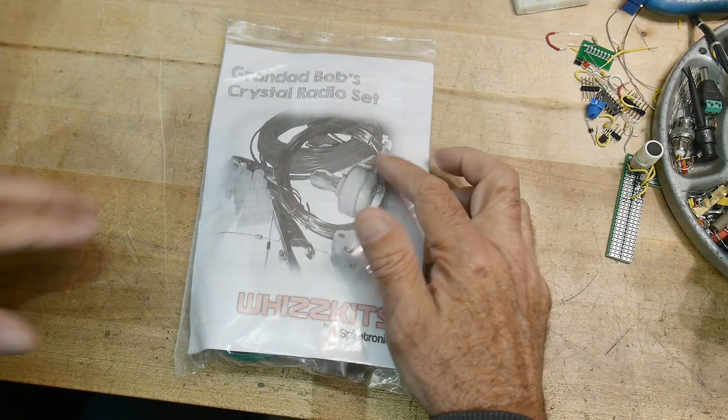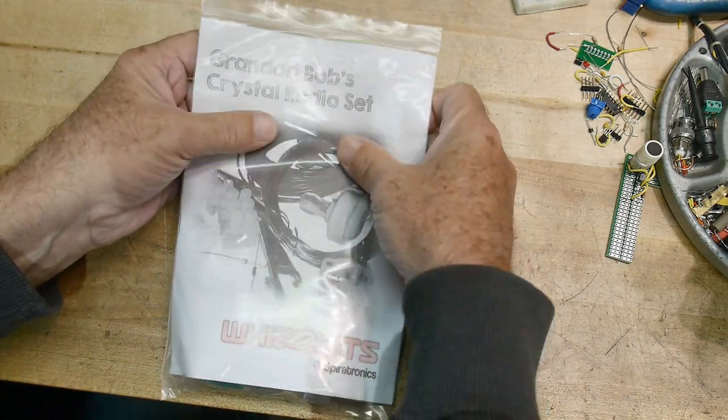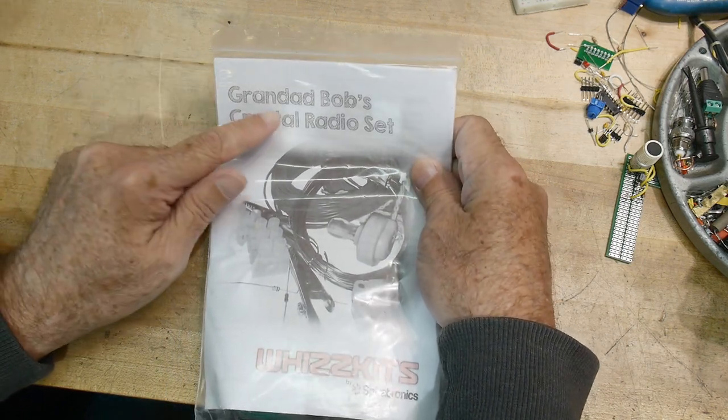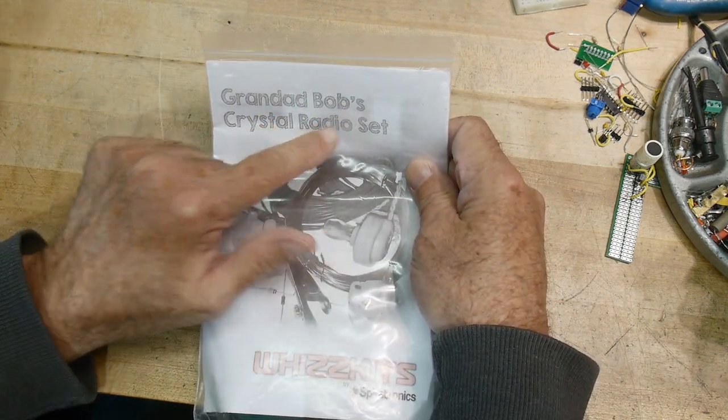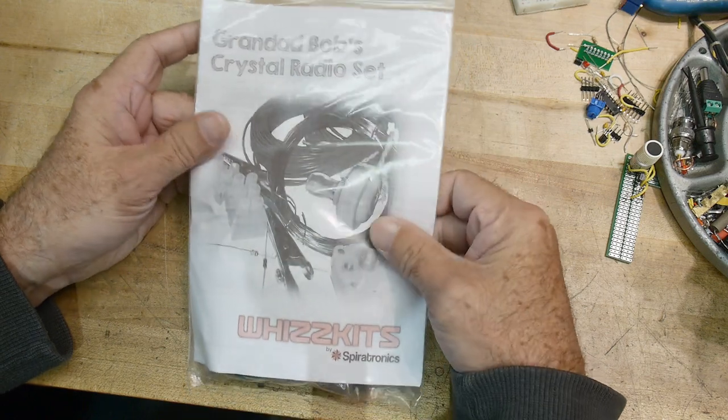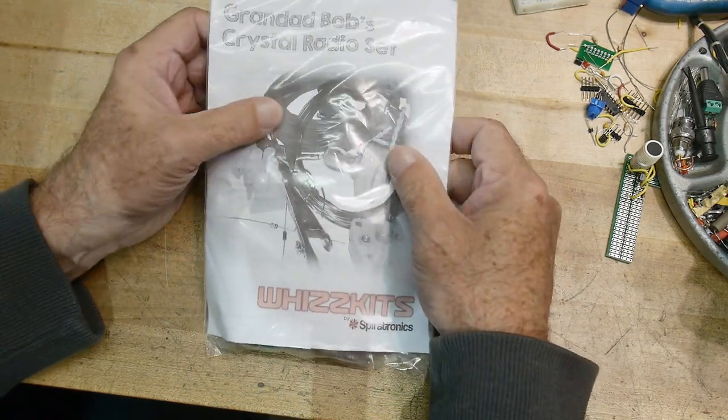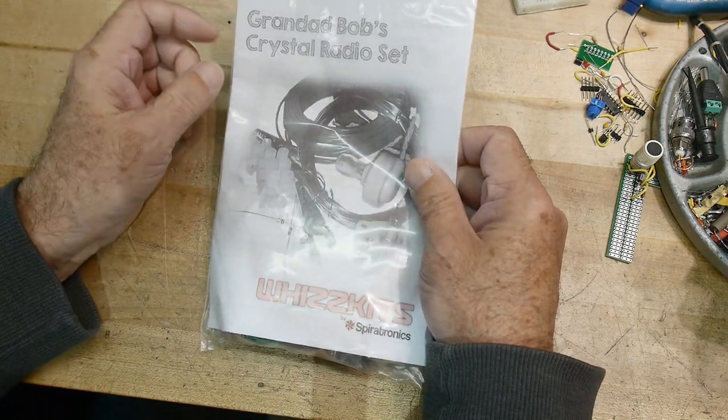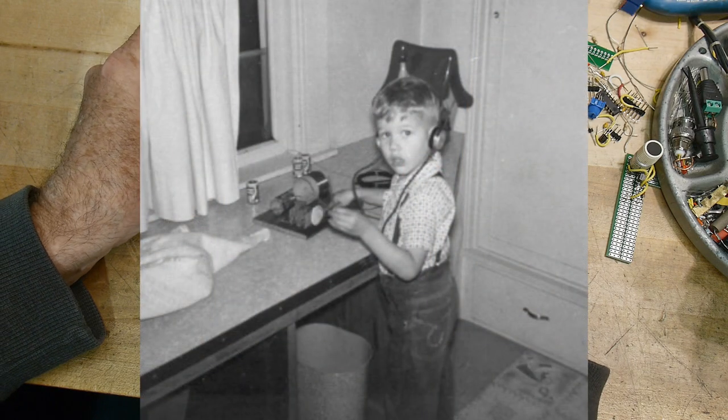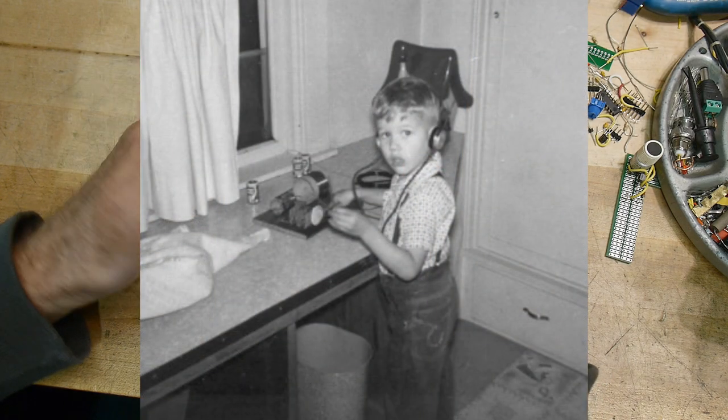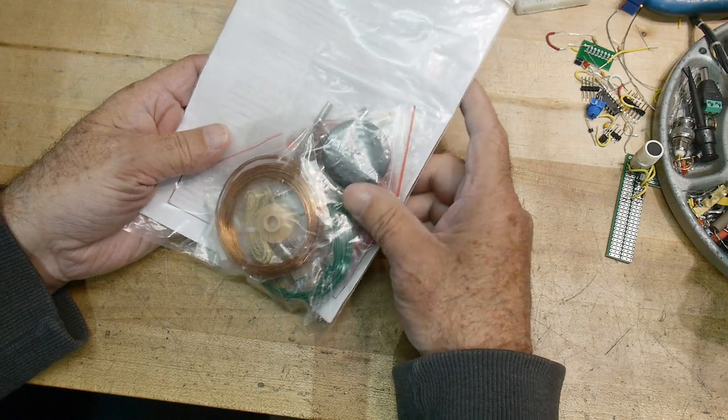All right, thought I'd have some fun today. I have a kit here - Granddad Bob's crystal radio set. A crystal radio! Oh my goodness, I remember having a crystal radio when I was really small. My dad built me one - maybe that's where I got the interest in electronics.